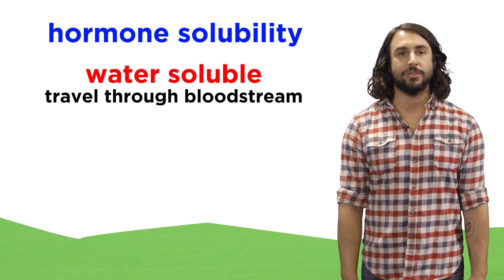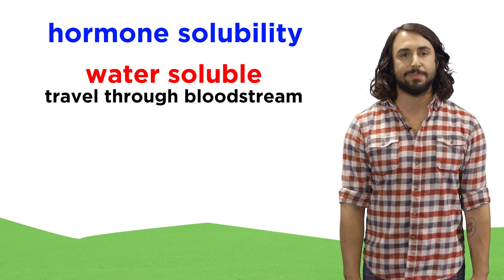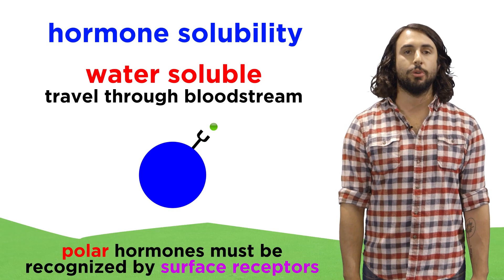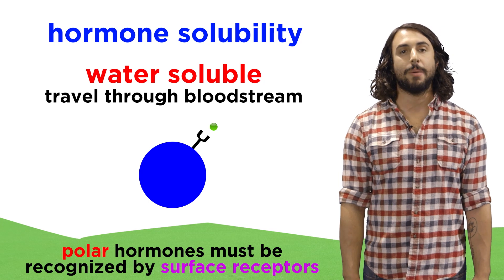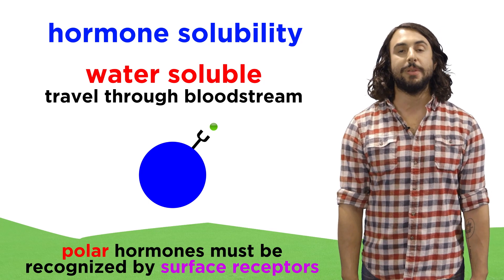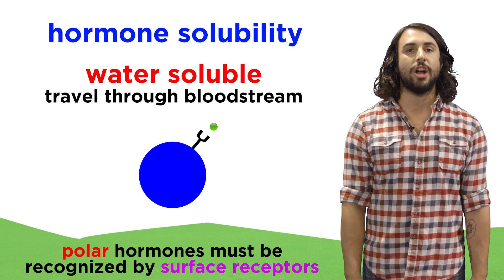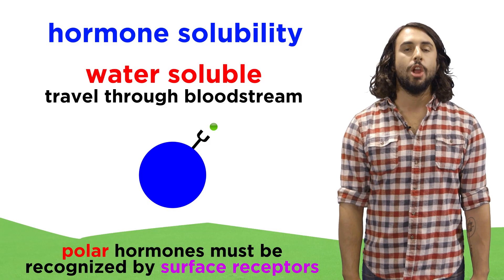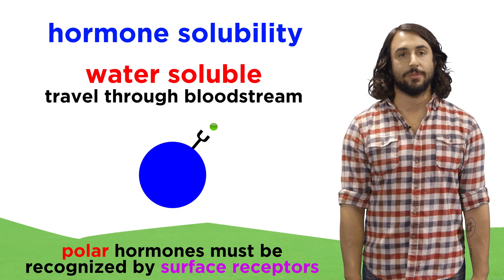Water-soluble hormones can travel through the aqueous bloodstream freely, but they can't pass through the nonpolar plasma membrane of a cell, so these will typically be recognized by receptors on the surface of the cell, which upon binding will initiate signal transduction.